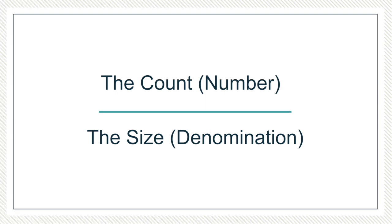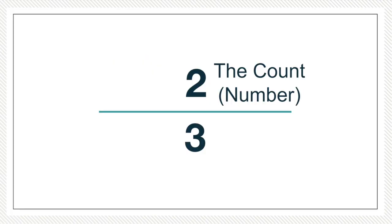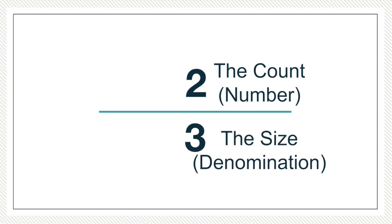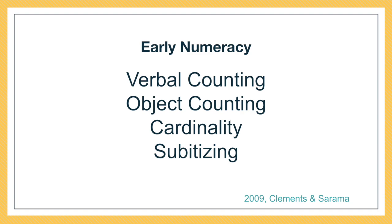The denominator is the denomination or size of those items. So with two thirds, we want students to think of that as two — that's the count, the number of things we have — one third pieces. One third is the denomination; it's the size of those pieces. One of the best ways to help them understand that is by developing the four early numeracy concepts, which I've discussed in other videos linked in the show notes. We want those four early numeracy concepts developed around fractions because that's really what fraction sense is made out of.